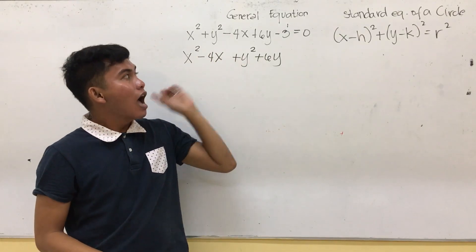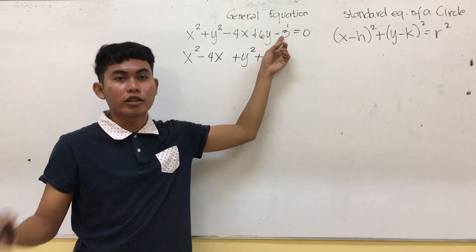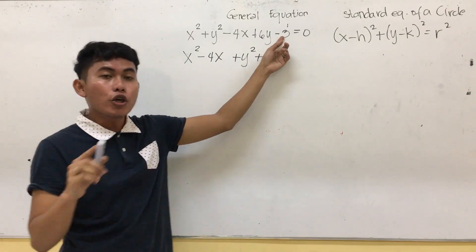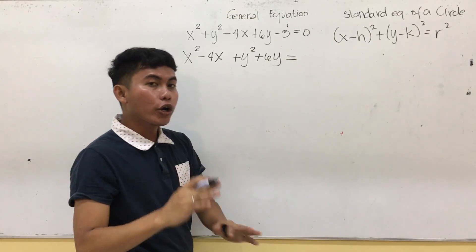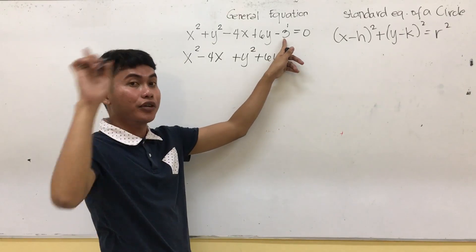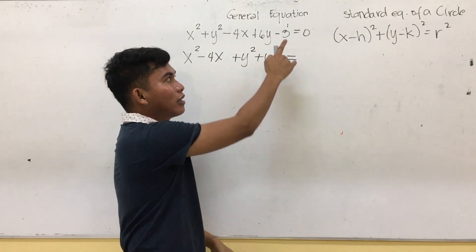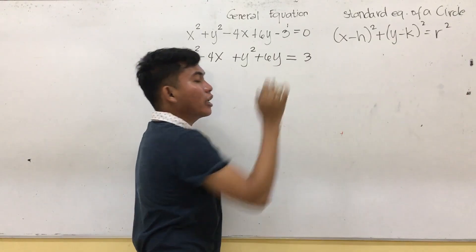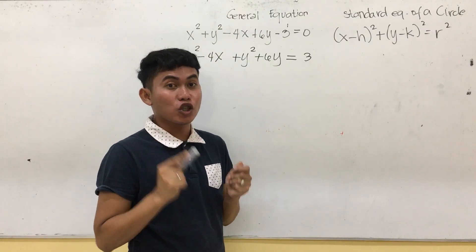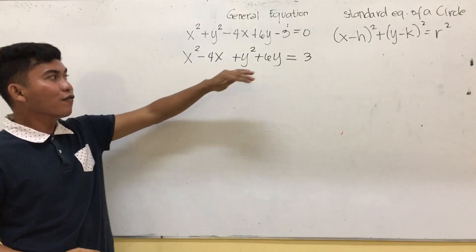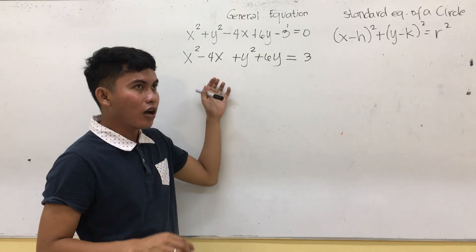Keep the same variables together. And of course the constant, which is 3 — you are going to transpose the constant to the other side. So instead of a negative sign, the sign of our constant will turn into positive.